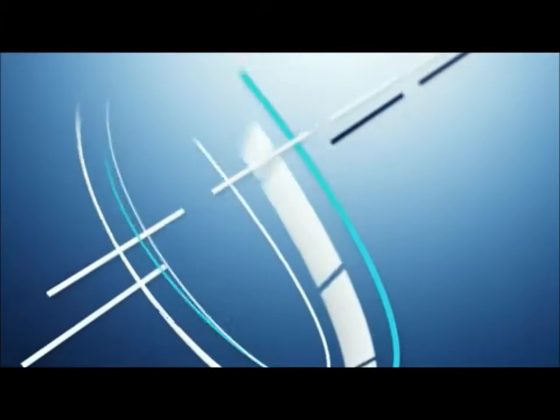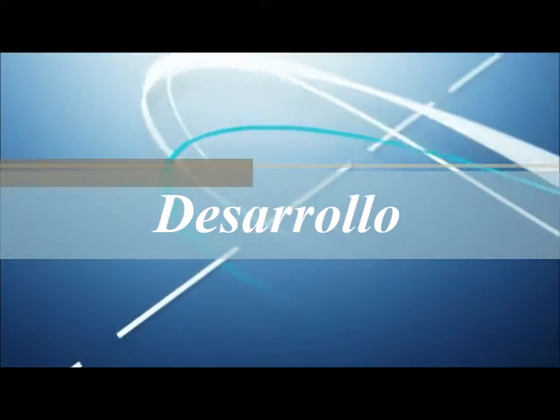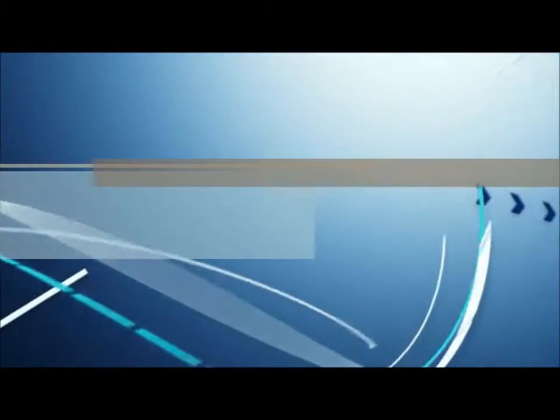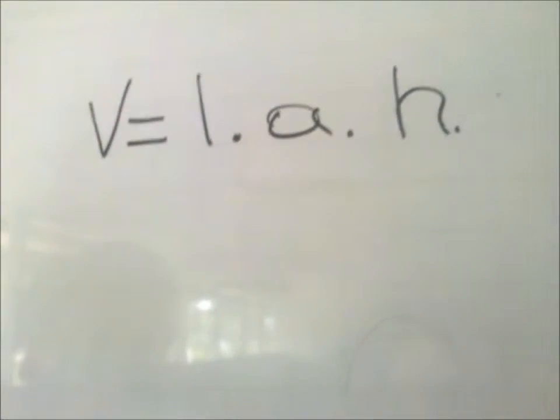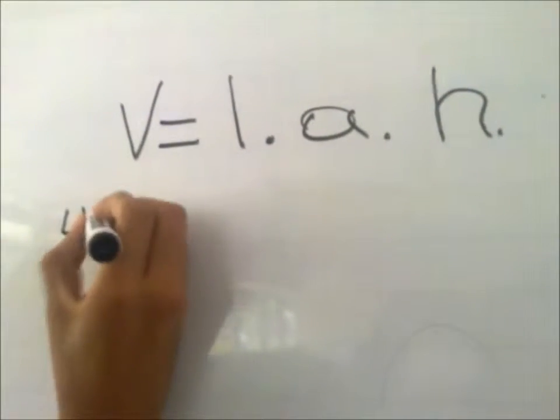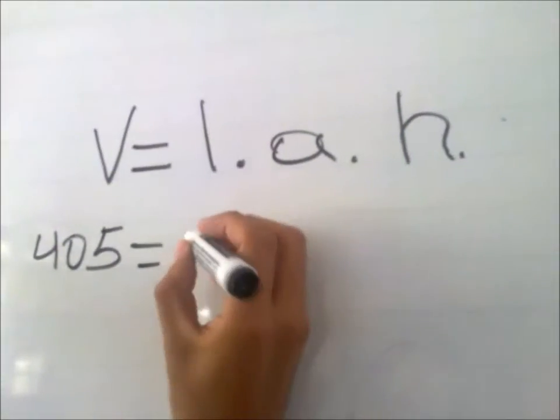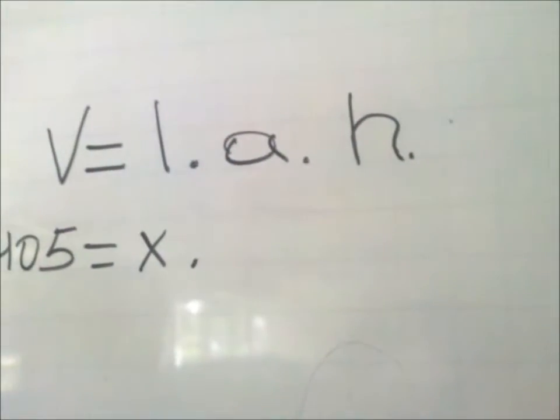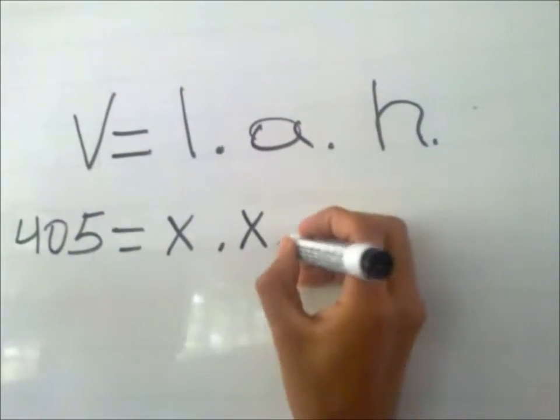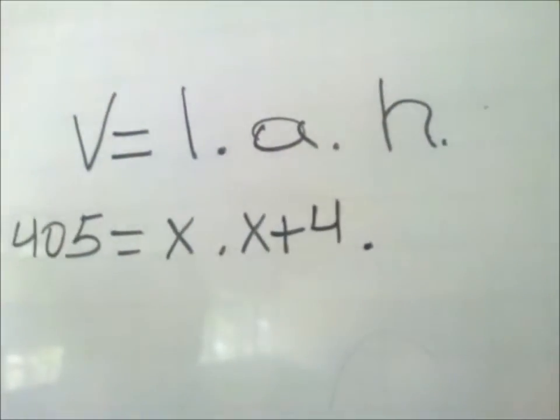Let's proceed with it. Once we have the formula, we proceed to replace the values. We know that the volume is equal to 405, and that the length is equal to x, by x plus 4 which is the width, and by the height which is 9.